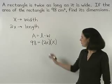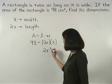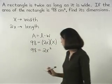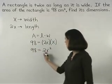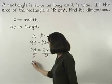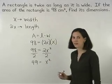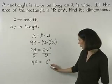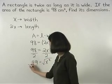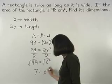Solving from here, 2x times x is 2x squared, so we have 98 equals 2x squared. Dividing both sides by 2 gives us 49 equals x squared. To get the x term by itself, we take the square root of both sides and find that 7 equals x.